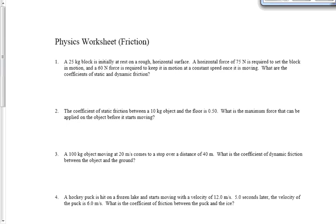The force required to get something moving corresponds to the maximum possible force of static friction. So let's write that down. We know the mass is 25 kilograms, and we know that FSF max — the maximum force of static friction — is 75 Newtons. Now we also have a force of 60 Newtons. What does that one correspond to?